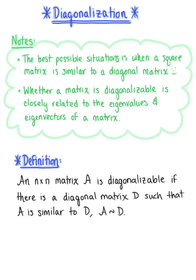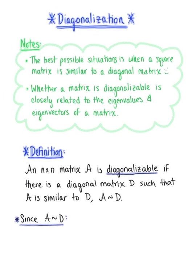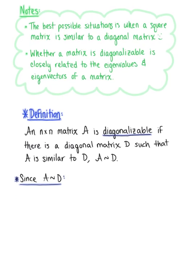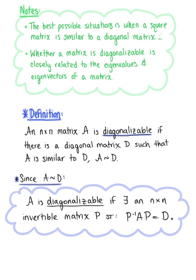We say that an n by n matrix A is diagonalizable if there is a diagonal matrix D such that matrix A is similar to matrix D. Since matrix A is similar to matrix D, we know that matrix A is diagonalizable if there exists an n by n invertible matrix P such that the inverse of matrix P times matrix A times matrix P is equal to the diagonal matrix D. Let's now look at an introductory example of diagonalization.